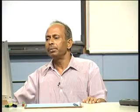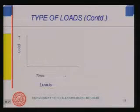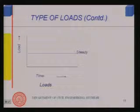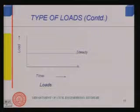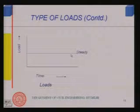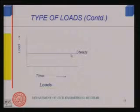Diagrammatically, if we look at load variation over time: a steady load remains constant throughout the structure's life — for example, the self-weight does not change as long as the structure exists, so it is a constant horizontal line over time.